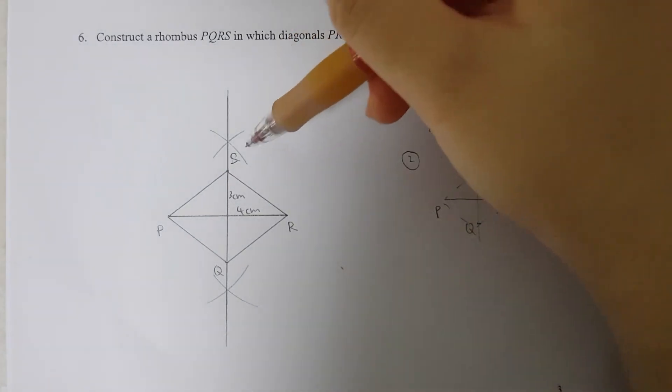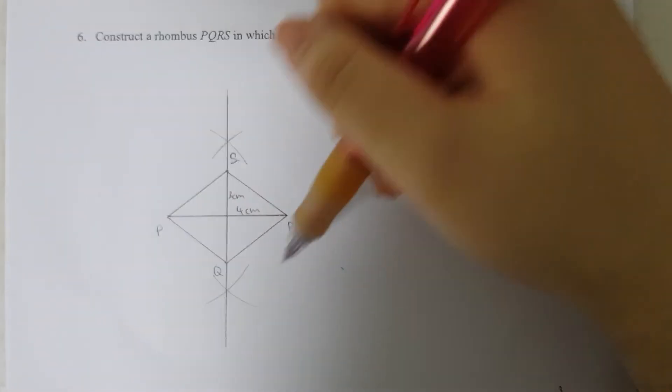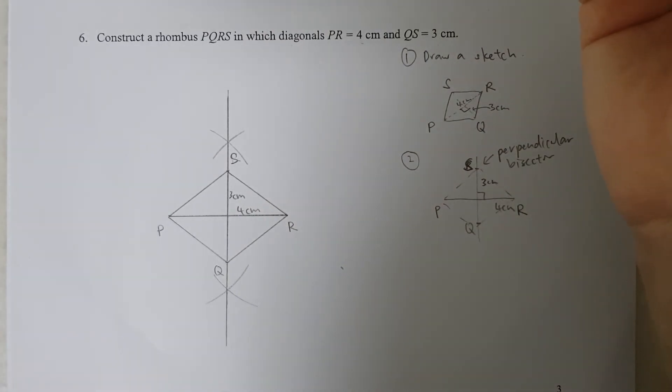And my rhombus will be like this. I will not erase away the workings that I have to actually draw out the rhombus PQRS. I'll leave this as my answer.